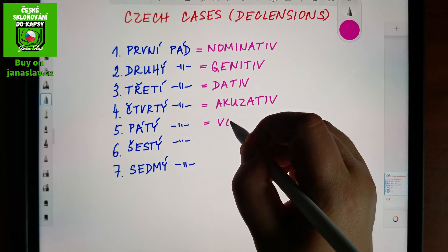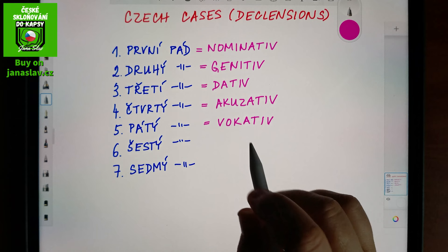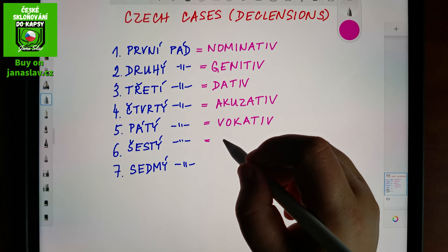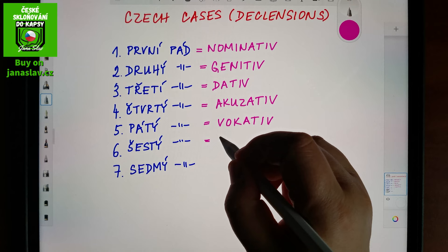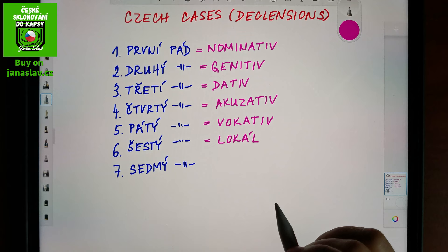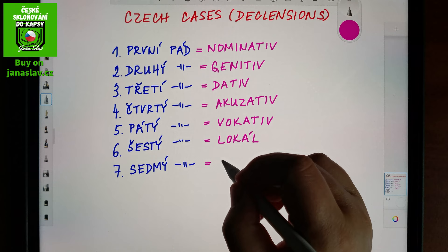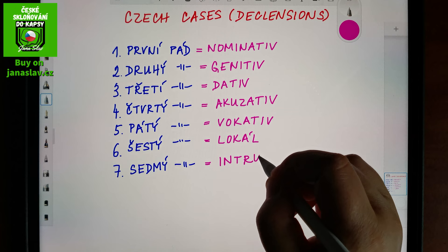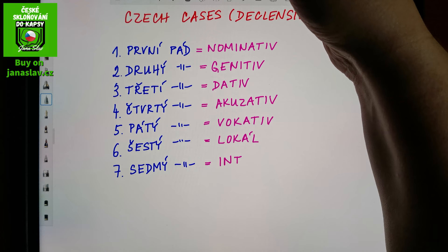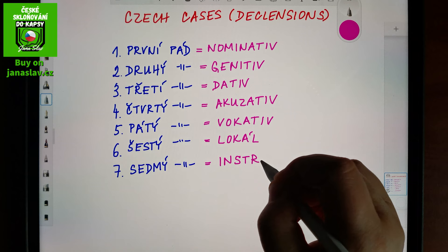The fifth case is the vocative — in Czech 'vokativ.' The sixth is the locative — in Czech we call it 'lokál,' which has a different ending from the previous ones. The last one, the seventh, is the instrumental — in Czech 'instrumentál.'